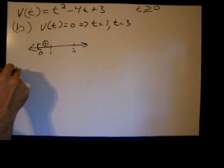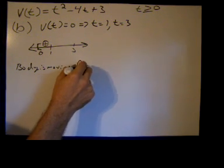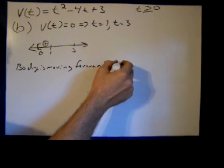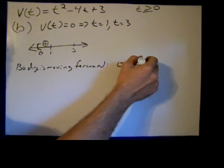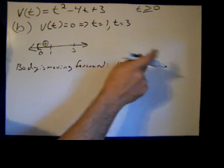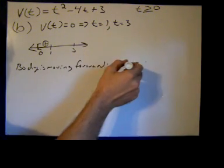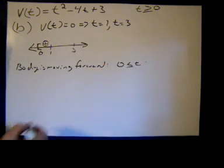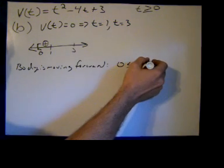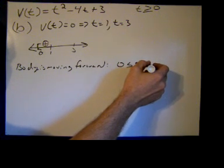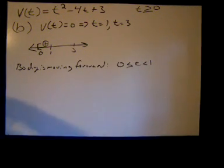So the body is moving forward when t is between 0 and 1. We also check t = 0: the velocity is positive there, so the body is actually moving forward at t = 0 as well. Therefore it is definitely moving forward when t is greater than or equal to 0 and less than 1.